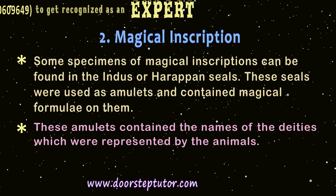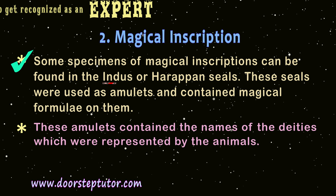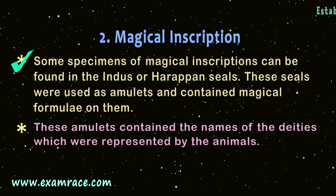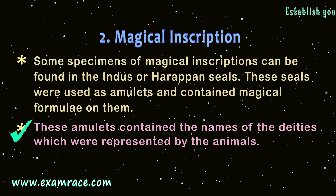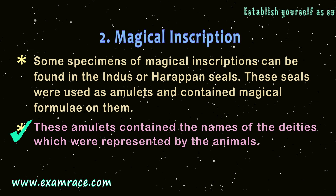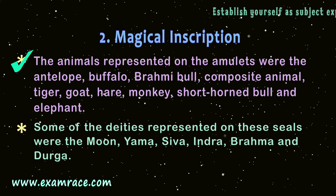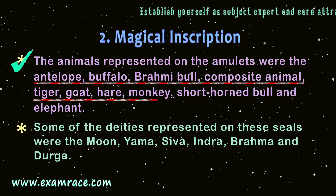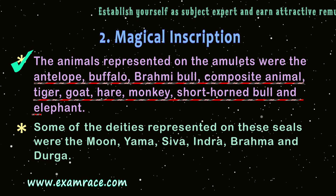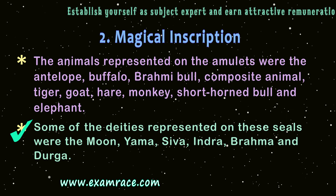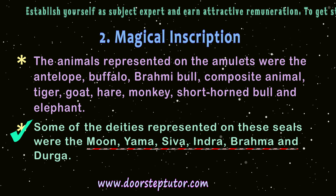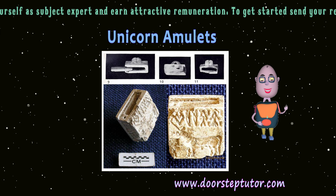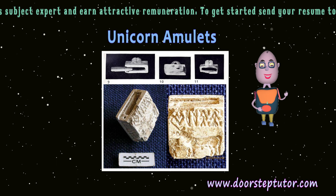Some specimens of magical inscriptions can be found in the Indus or Harappan seals. These seals were used as amulets and contained magical formulae on them. These amulets contained the names of deities, which were represented by animals. The animals represented on the amulets were the antelope, porcupine, Brahmin bull, composite animal, tiger, goat, hare, monkey, shorthorn bull, and elephant. Some of the deities represented on these seals were Moon, Yama, Shiva, Indra, Brahma, and Durga. In this picture, you can see amulets found from the sites of Indus Valley Civilization.